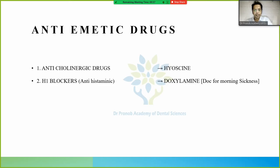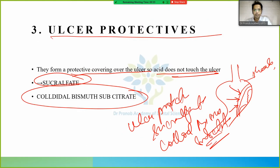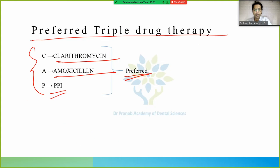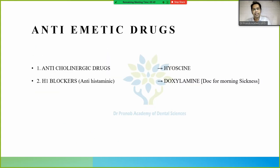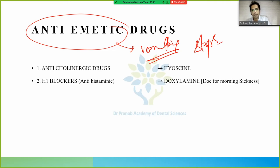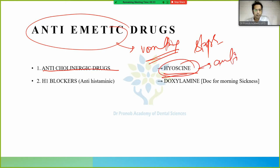Now we'll study anti-emetics — drugs that stop vomiting. We have already studied anticholinergic drugs in the ANS chapter; hyoscine has anti-emetic properties.